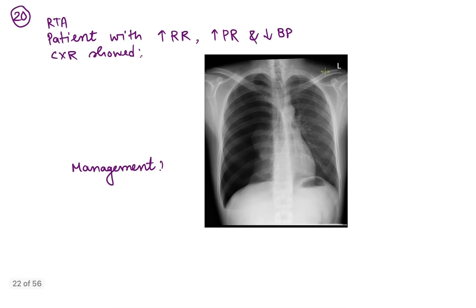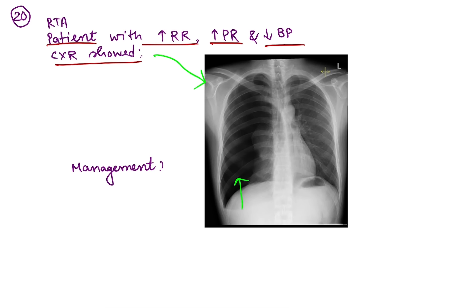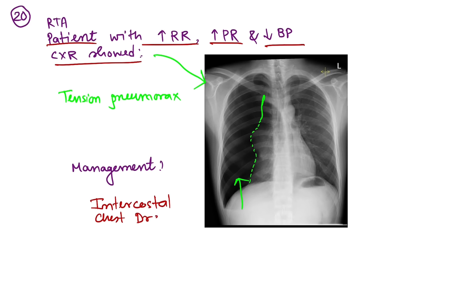Coming to question number 20: following a road traffic accident, a patient presents with increased respiratory rate, increased pulse rate, and hypotension. The chest X-ray shows a hyperlucent lung — more blackish lung without bronchovascular markings — with a delineated collapsed lung border. This is presence of air inside the pleural cavity following RTA with obstructive shock — tension pneumothorax. Management is needle thoracostomy followed by intercostal chest drain as definitive treatment. I have discussed questions 11 to 20.